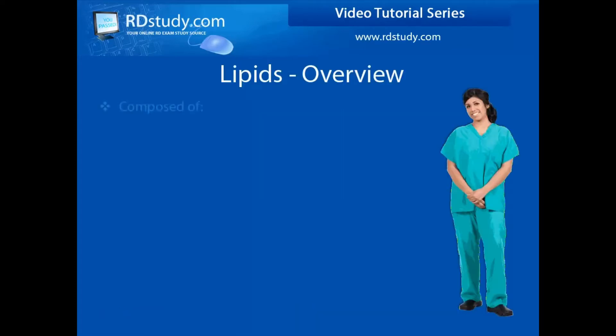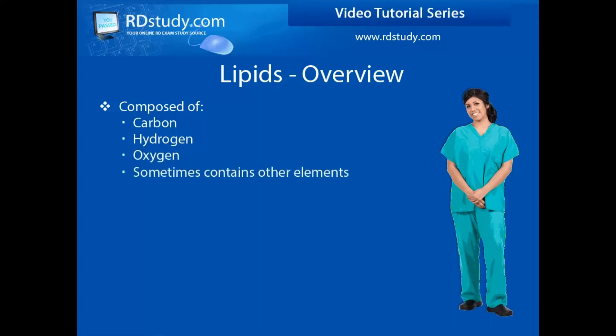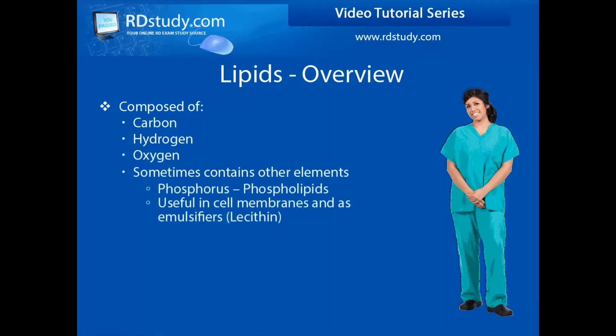Lipids are composed primarily of carbon, hydrogen, and oxygen. Some lipids also have other elements such as phosphorus as part of the molecule.